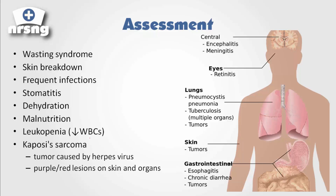We're going to see wasting syndrome, where they become very fragile and frail. We're going to see skin breakdown, frequent infections, stomatitis, dehydration, and malnutrition. They're not going to be able to use the food they take or want to take any food. We're going to see leukopenia — a decrease in white blood cells. And one key symptom to keep in mind with AIDS is Kaposi's sarcoma.